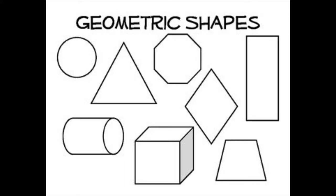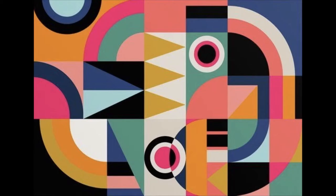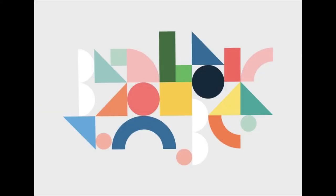Geometric shapes are any type of shapes that are based on math principles. You also know them by name, like a square, a circle, a triangle, a trapezoid, and all of those.